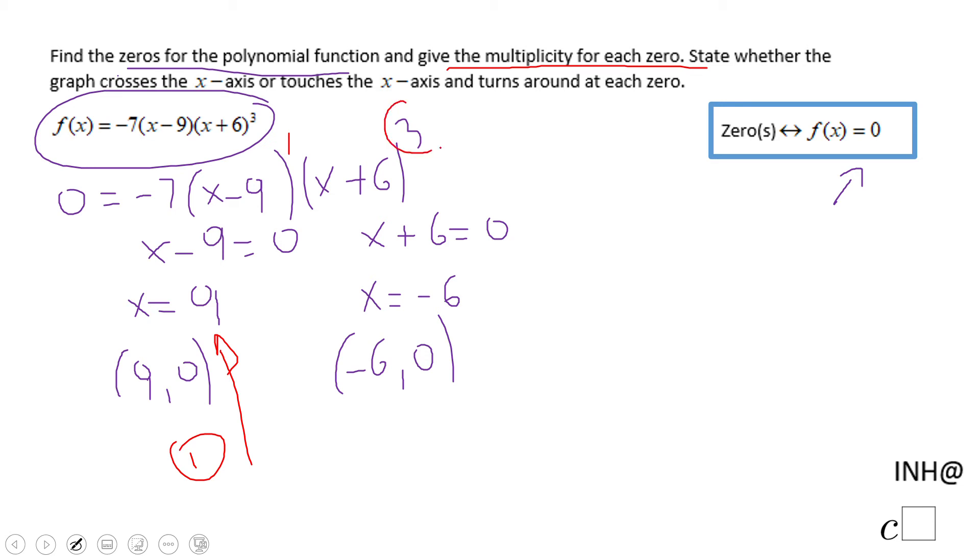And what about negative six? You already notice I showed you a degree of three there. The multiplicity of that zero is multiplicity three.